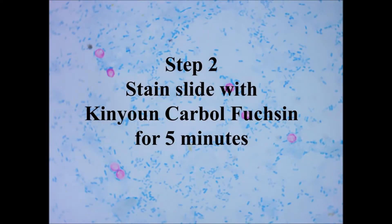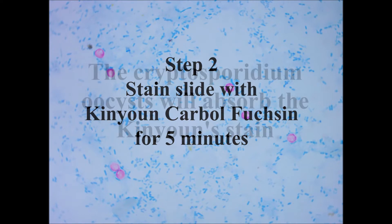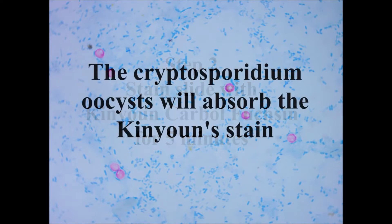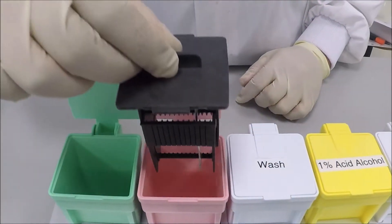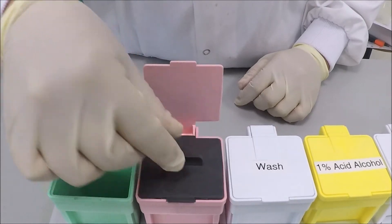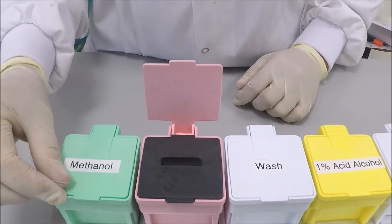Step 2: stain your slide with Kinyoun carbofuchsin for 5 minutes. The cryptosporidium oocyst will absorb the Kinyoun stain and turn a pink-purple colour.